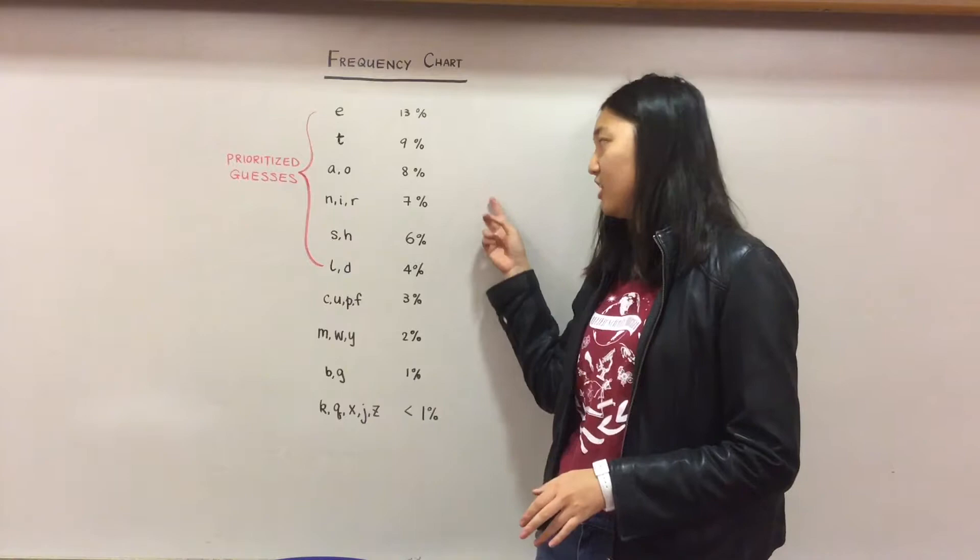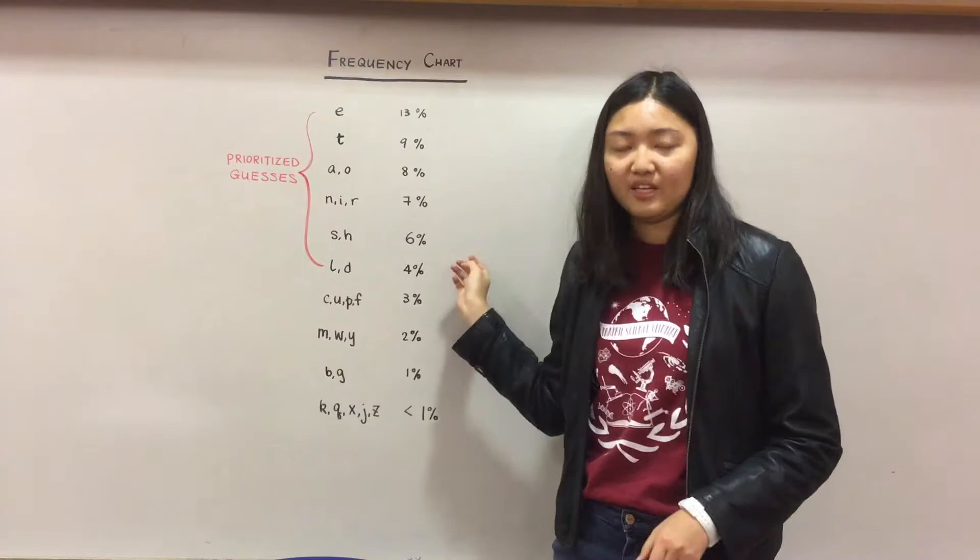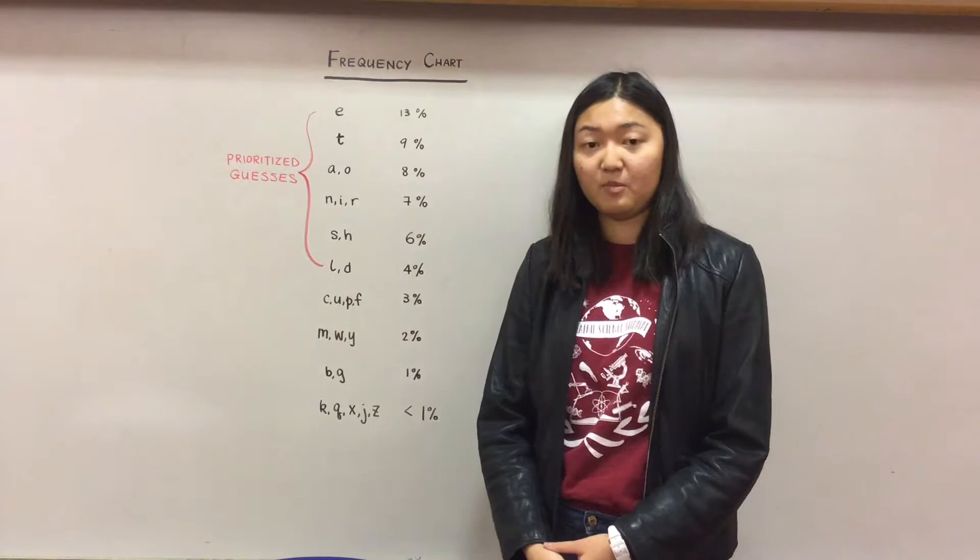And then AO, NIR, SH, and so on. So for the first six rows, this part will be something nice that you can remember to prioritize over other letters. Remember that E is always a good guess for vowels, and it's the most frequent letter in the English language.